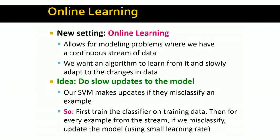We can think of it this way: we first train the classifier on the training data, and then for every example that comes from the stream, if we misclassify it, we update the model using a smaller learning rate. We just want to slightly update the model.